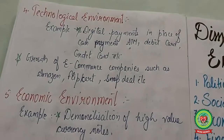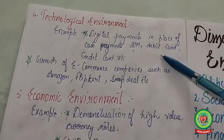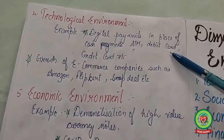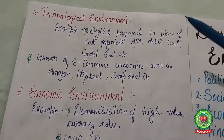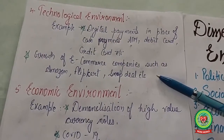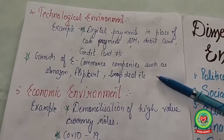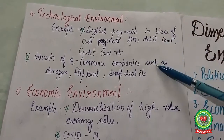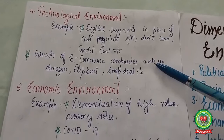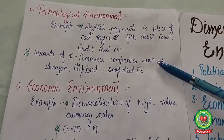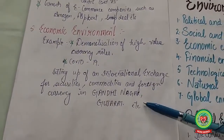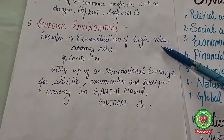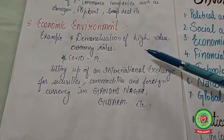Next is the technological environment. Examples include digital payments in place of cash payments — ATM, debit card, credit card — and the growth of e-commerce companies such as Amazon, Flipkart, and Snapdeal. How technology changes and affects the business enterprise is the technological environment.